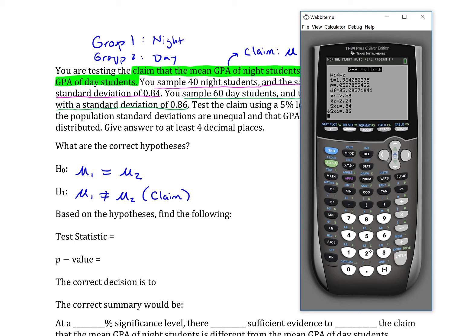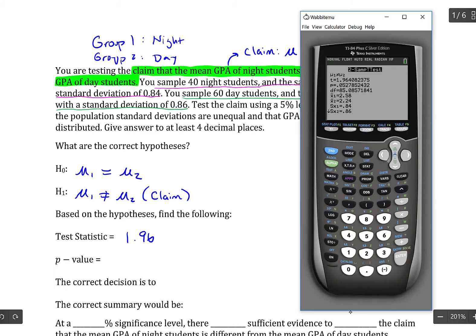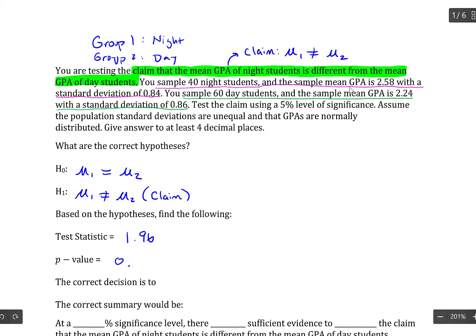The calculator comes up with all the information that we need. The very first item is the test statistic, and that is 1.96. And then we have the p-value, which is 0.0528.